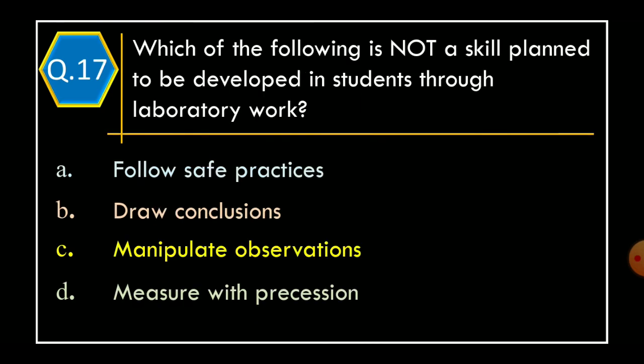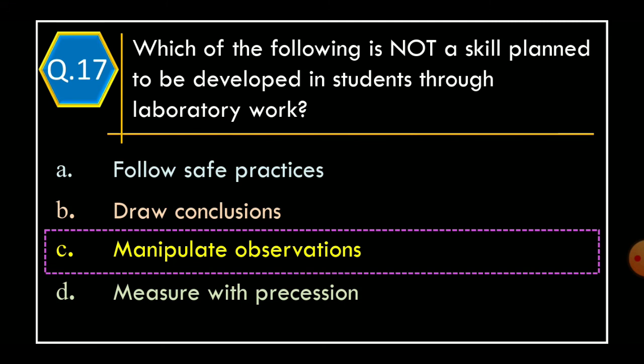Question 17: Which of the following is not a skill planned to be developed in students through laboratory work? Option A, follow safe practices; Option B, draw conclusions; Option C, manipulate observations; Option D, measure with precision. The correct option is Option C: manipulate observations.